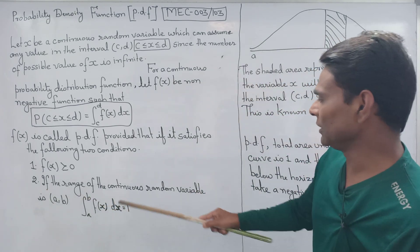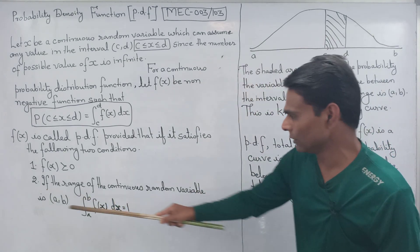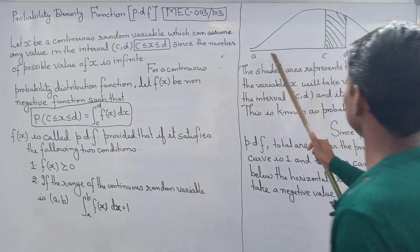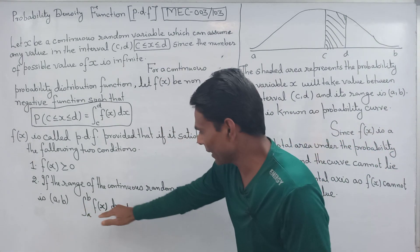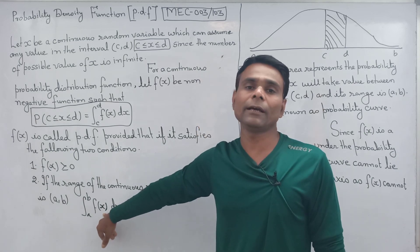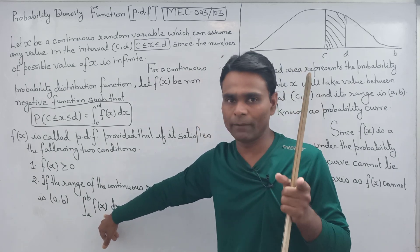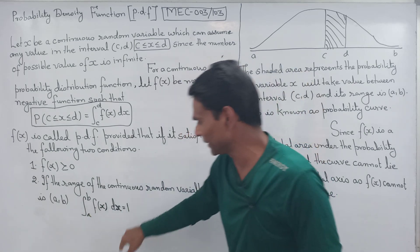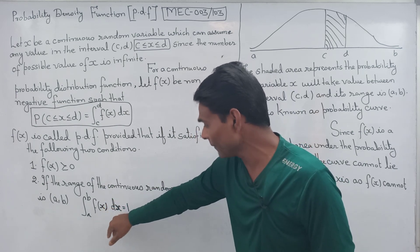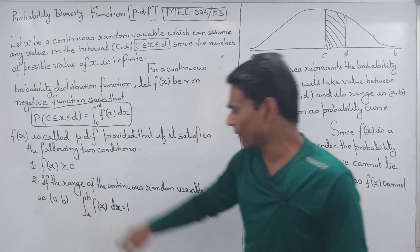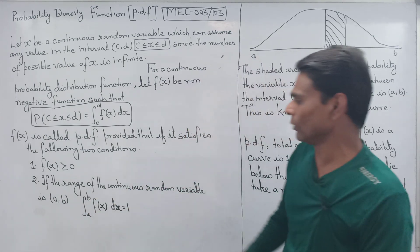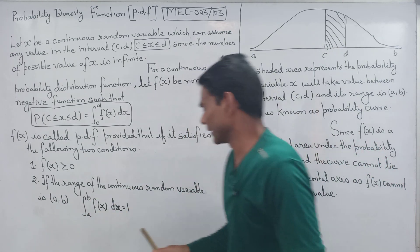If the range of continuous random variable is AB, then the integration of FX with respect to X from lower limit A to upper limit B equals 1. This represents the total area under the probability curve.